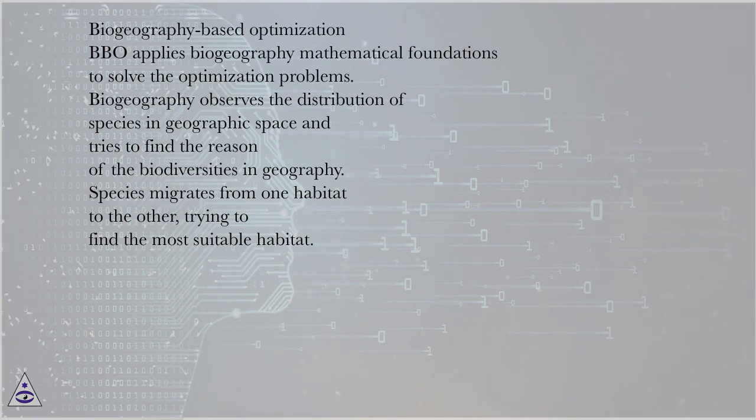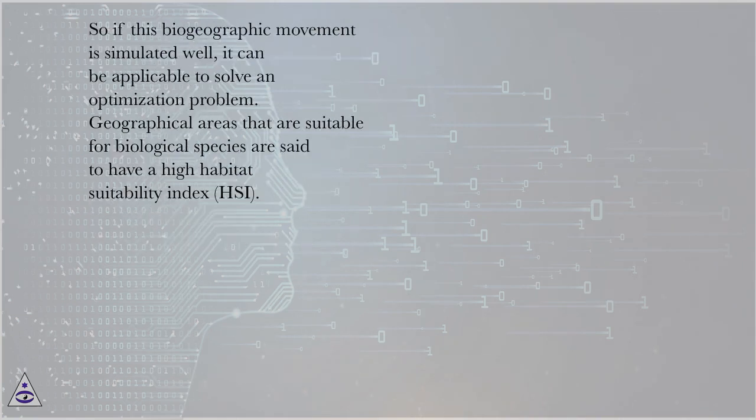Species migrates from one habitat to the other, trying to find the most suitable habitat. So if this biogeographic movement is simulated well, it can be applicable to solve an optimization problem. Geographical areas that are suitable for biological species are said to have a high habitat suitability index, HSI.